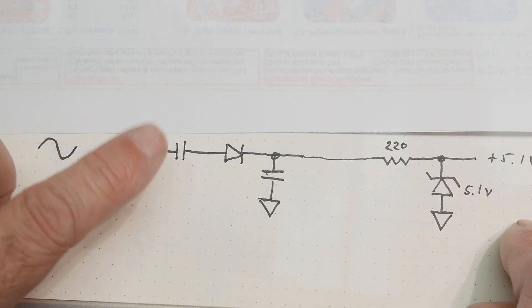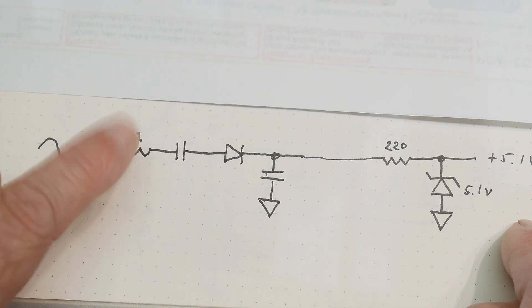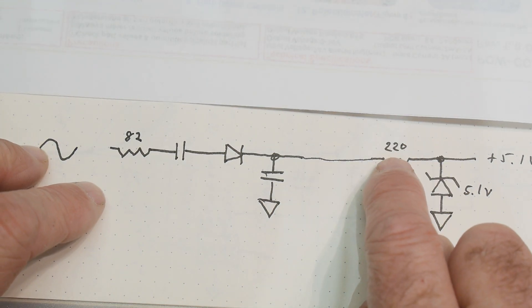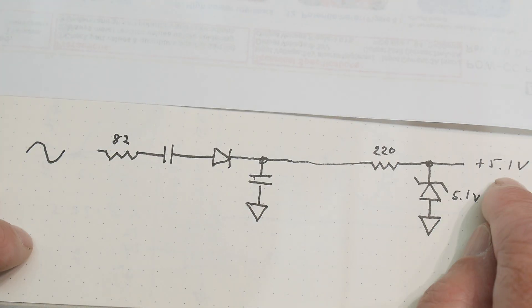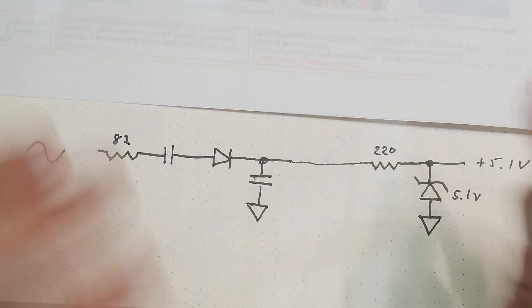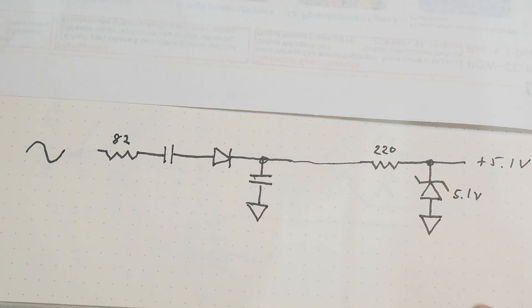And we are current limiting with this 82 ohms, and we're current limiting with this 220. So the current capability of this, you need to calculate how much current do I really need at 5 volts? But you could work this out. So this is how you could make plus 5 volts.